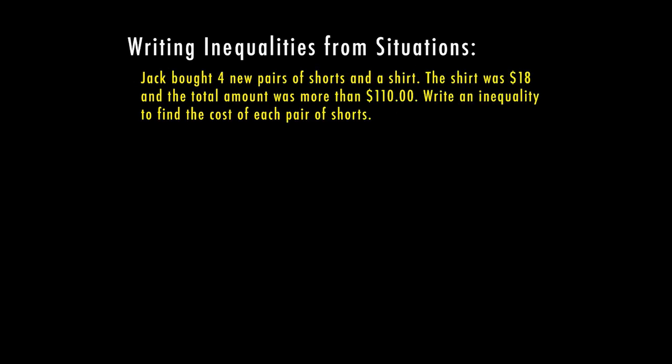So let's look at a couple other examples and go ahead and break these down. So now we have Jack and Jack bought four new pairs of shorts and a shirt. The shirt was $18 and the total amount was more than $110. Write an inequality to find the cost of each pair of shorts. Another key part here that's going to let you know that this is not a typical equation is when they put inequality in the problem, which is not always going to be the case, but here they do do that for us. So again, we're trying to find the cost of each pair of shorts. So we're going to make S our variable.